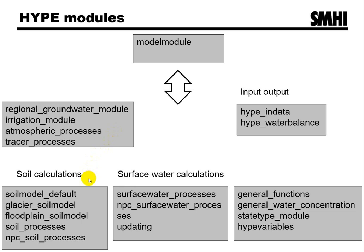Soil calculations: HYPE currently has three models for the soil in separate modules. The ordinary one, one for a class with a glacier, and one for a class with a floodplain. All of them utilize subroutines in the modules for soil water processes and soil nutrient processes. The modules for surface water are: one for all general surface water processes, one for nutrient processes, and one for updating the subbasin outflow with observations.